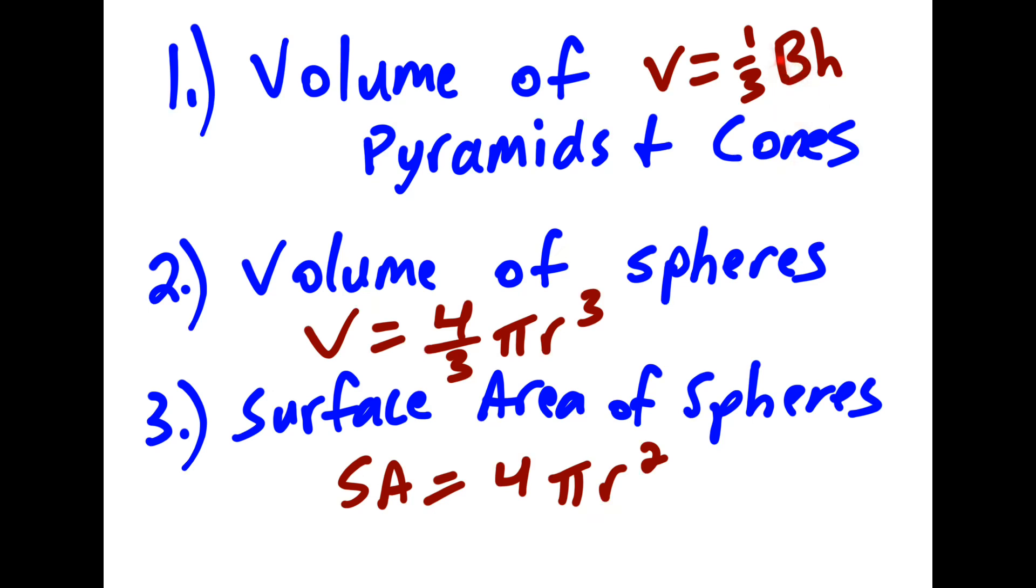If it's a cone, it'll be using the formula for area of a circle. If it's a pyramid, it might be using the formula for area of a square or a rectangle. But other than that, the formula is the same for both.